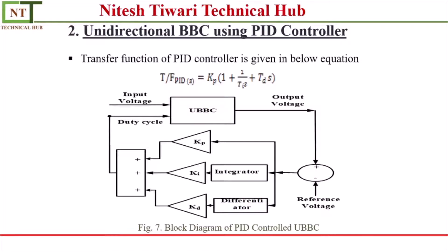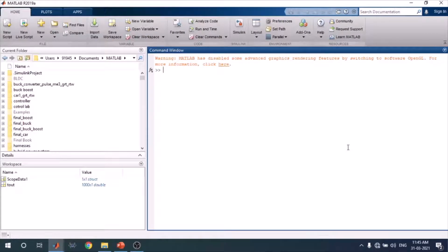This is the basic block diagram of the PI-controlled unidirectional buck-boost converter. We take the output voltage, compare it with the reference voltage, and an error signal is generated. This error signal goes to the PI controller, and the output of the PI controller goes to the gate pulse of the controlled switch. Let's begin with MATLAB and Simulink.